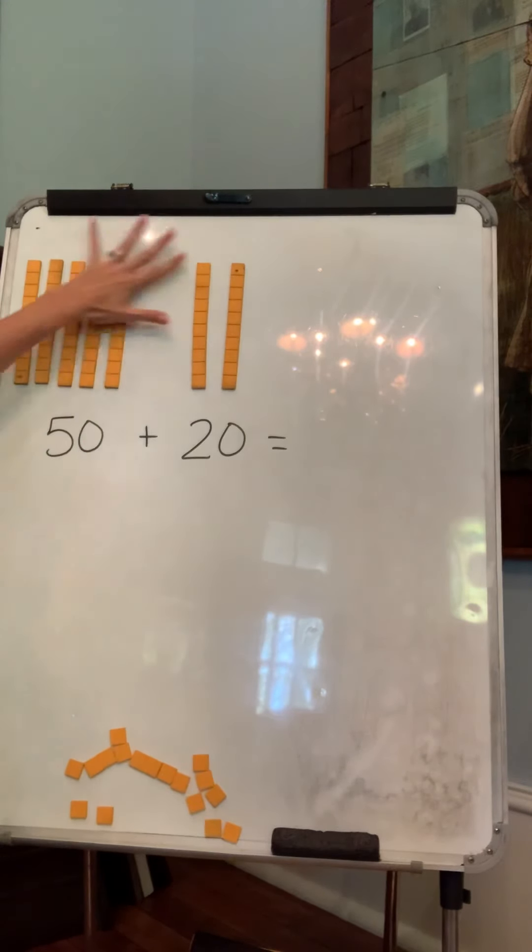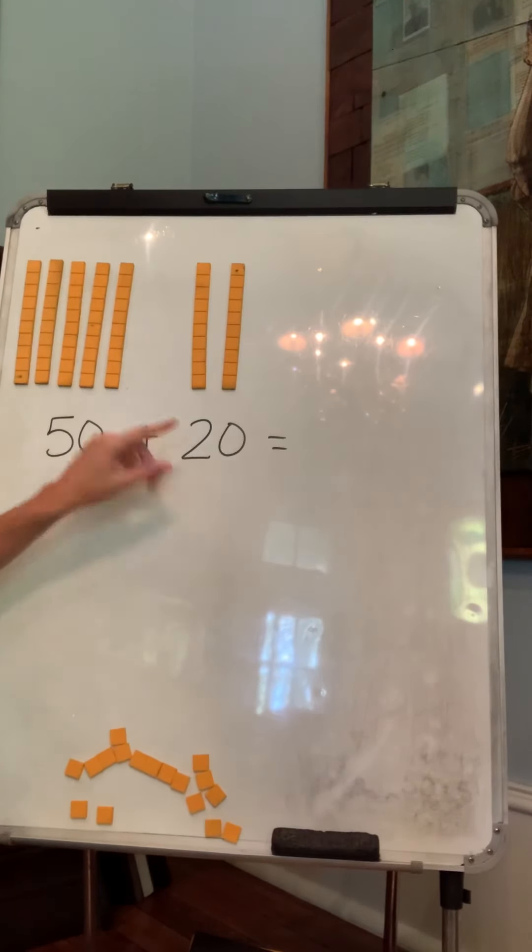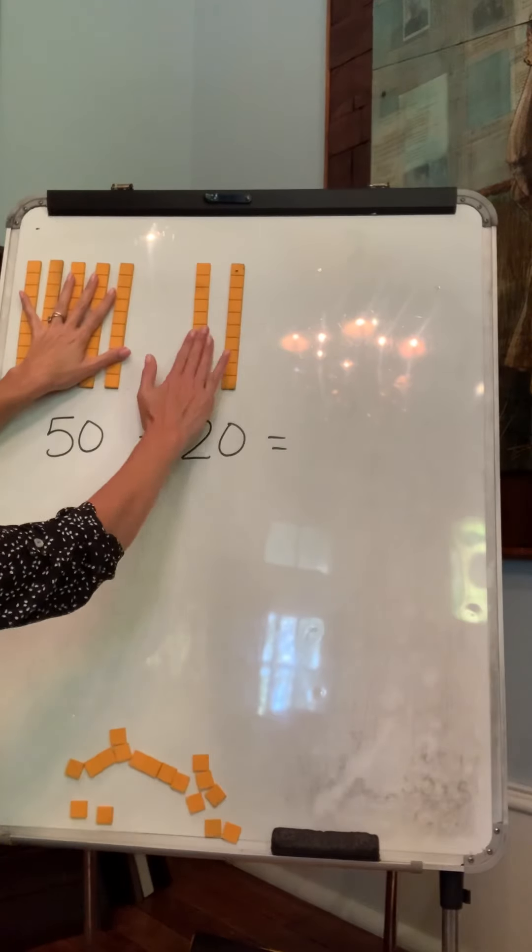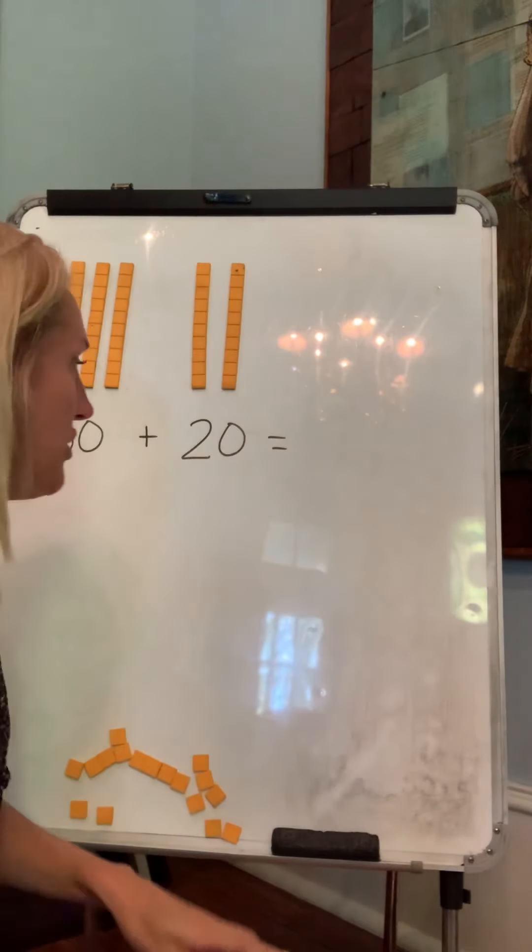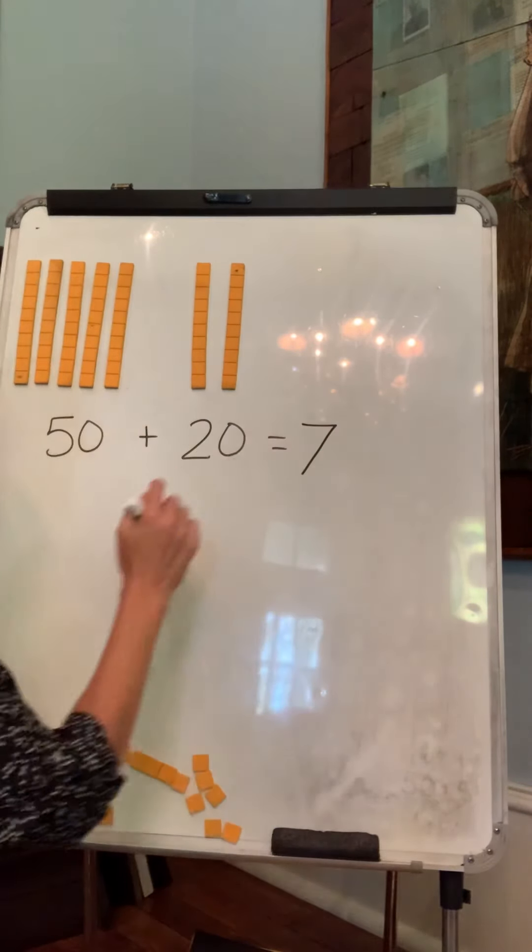Okay, so how much do I have all together? Well, look at the tens. I have five tens plus two tens. Five, six, seven. So I have seven tens,